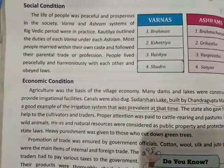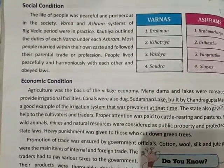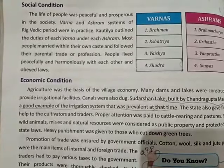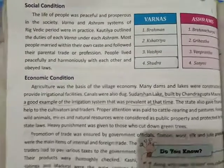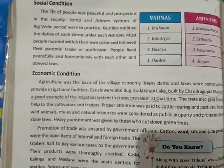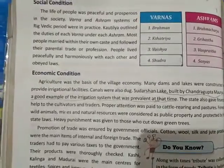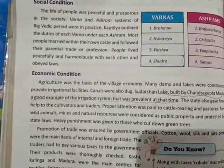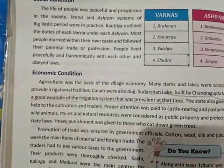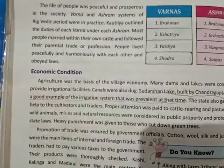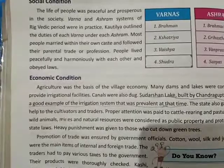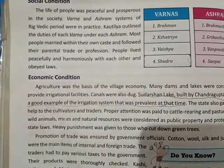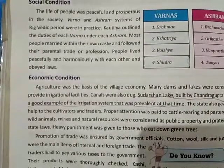Most people married within their own caste and followed their parental trade or profession, so inter-caste marriages were not common at that time — popular marriages were within the same caste only. People lived peacefully and harmoniously with each other.